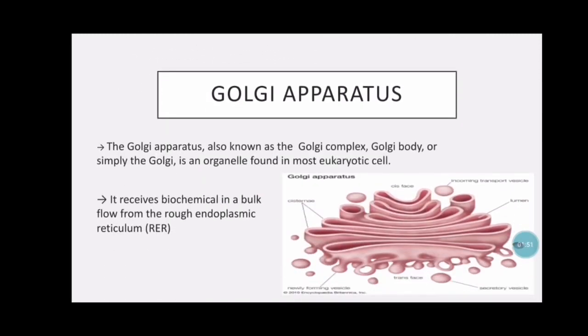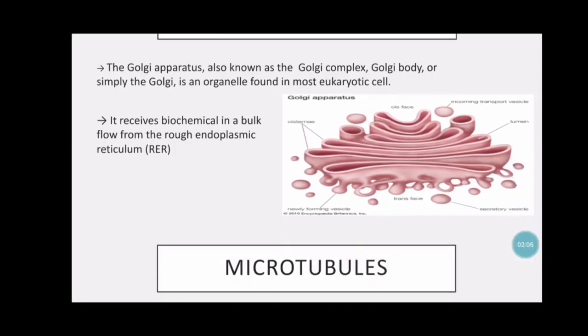Golgi apparatus. The Golgi apparatus, also known as the Golgi complex, Golgi body, or simply the Golgi, is an organelle found in most eukaryotic cells. It receives biochemical and bulk flow from the rough endoplasmic reticulum.